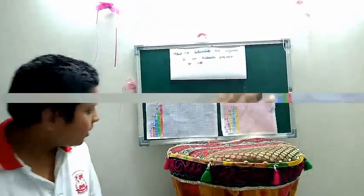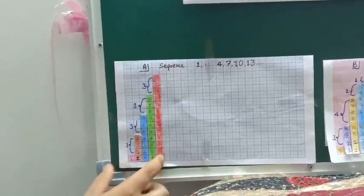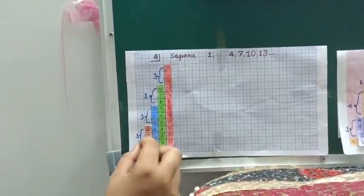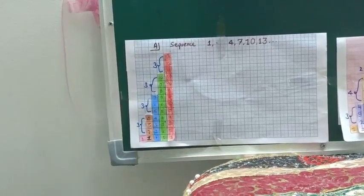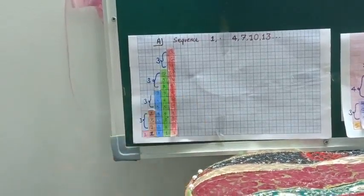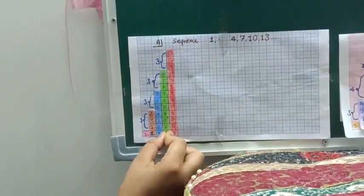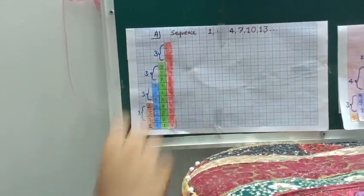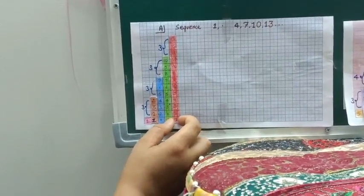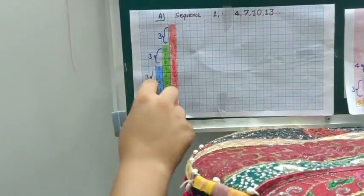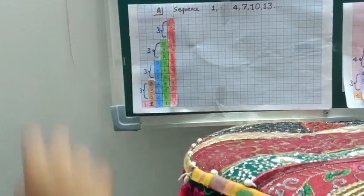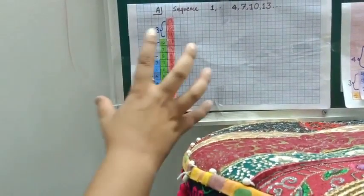You can see this board. We take 5 colourful strips: the 1st strip is 1cm broad and 1cm long, the 2nd strip is 1cm broad and 4cm long, the 3rd strip is 1cm broad and 7cm long, the 4th strip is 1cm broad and 10cm long, and the 5th strip is 1cm broad and 13cm long. We can observe that the common difference between the 5 strips is 3, so this is an AP because the common difference is equal.